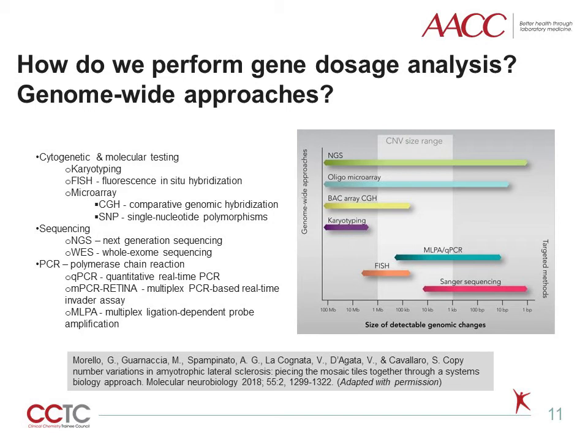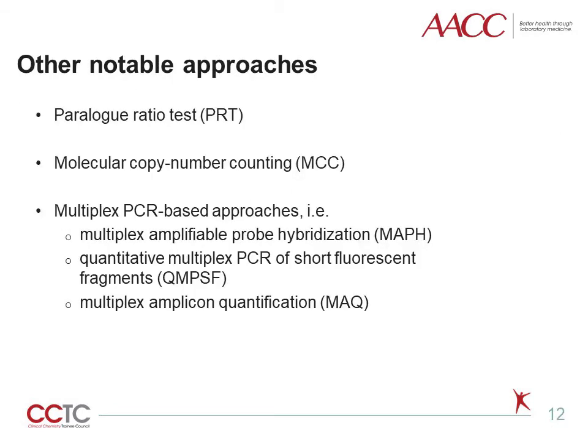PCR RETINA — multiplex PCR-based real-time invader assay — and MLPA, multiplex ligation-dependent probe amplification, is an alternative targeted PCR-based approach that allows simultaneous analysis of multiple targets with one primer pair, reducing the probability of obtaining spurious qPCR results due to different reaction conditions. Other notable approaches include paralog ratio tests (PRT), molecular copy number counting (MCC), multiplex PCR-based approaches such as multiplex amplifiable probe hybridization (MAPH), quantitative multiplex PCR of short fluorescent fragments (QMPSF), and multiplex amplicon quantification (MAQ).